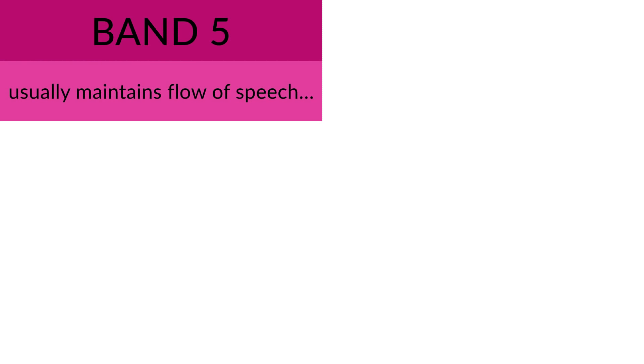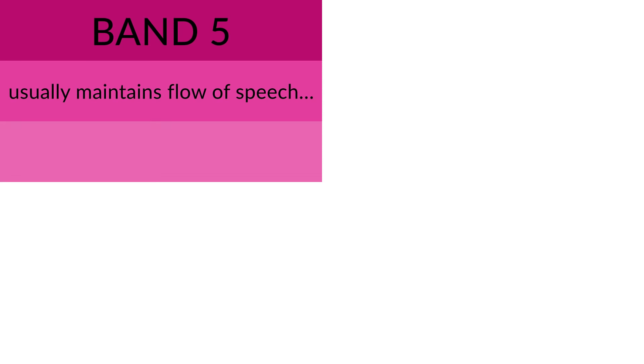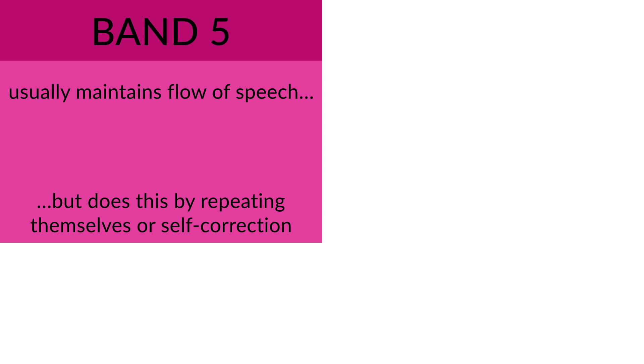I'm going to start by looking at band 5. What is your typical IELTS candidate who gets a band 5 doing in the speaking test? They will usually maintain their flow of speech across all three parts — they'll keep on talking — but it's often very slow speech. One way a band 5 candidate maintains their flow is by repeating themselves quite a lot and also by correcting themselves.